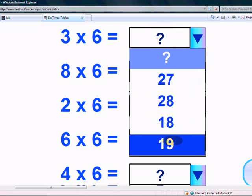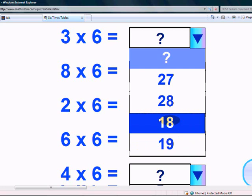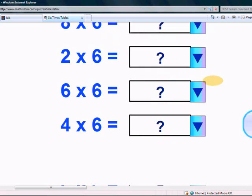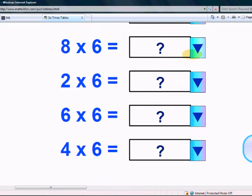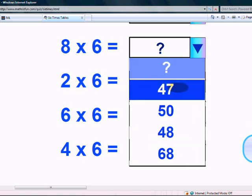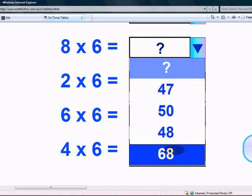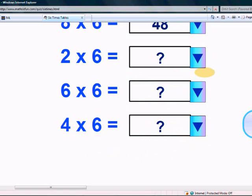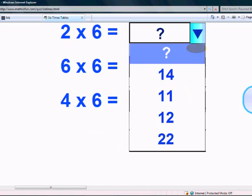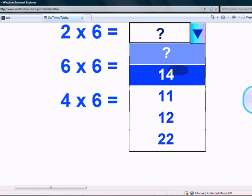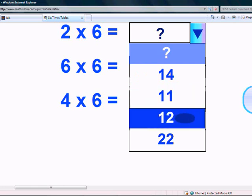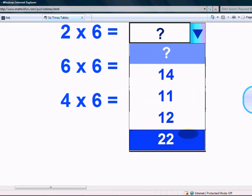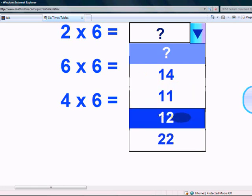What does 8 times 6 give? 47, 50, 48, or 68? 48, you are right. What does 2 times 6 give? 14, 11, 12, or 22? Yes, it's 12. Good job!